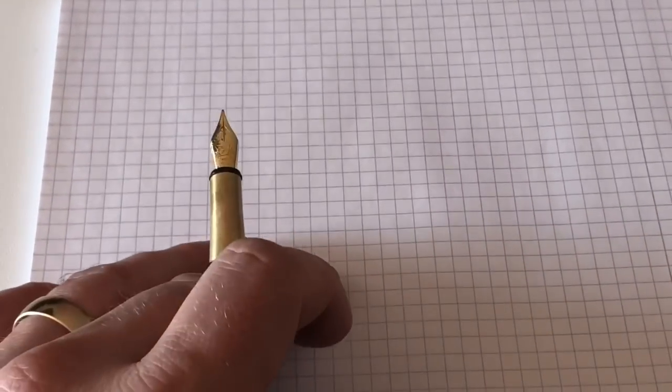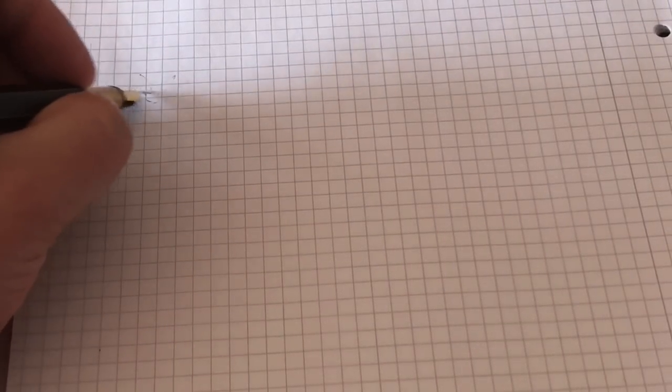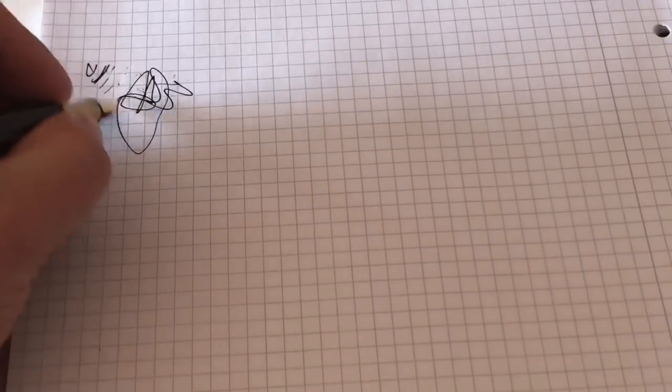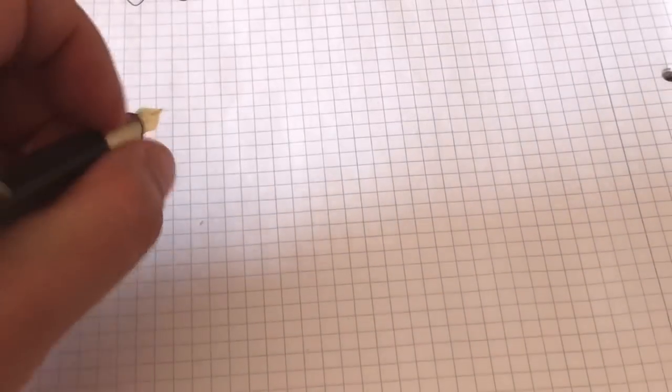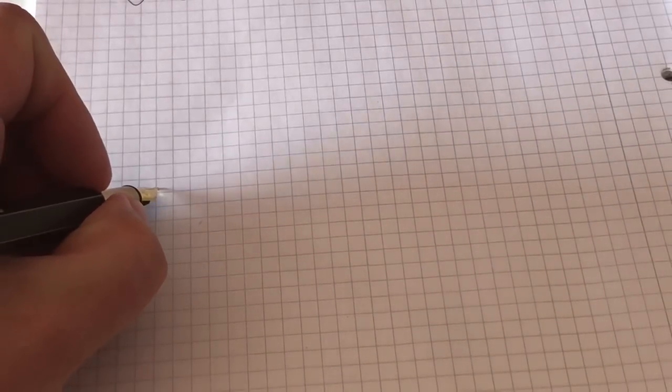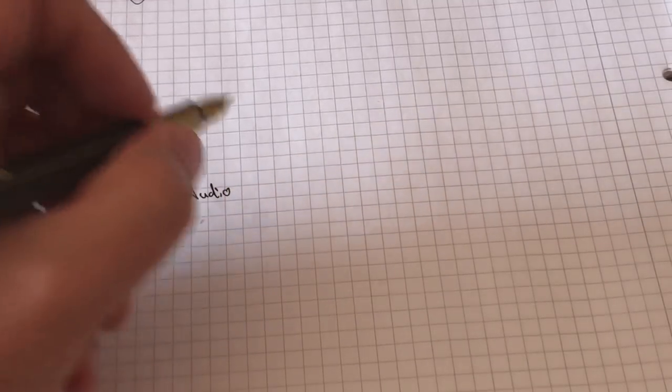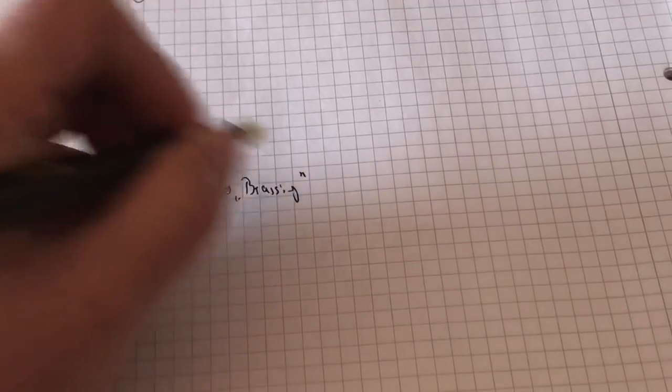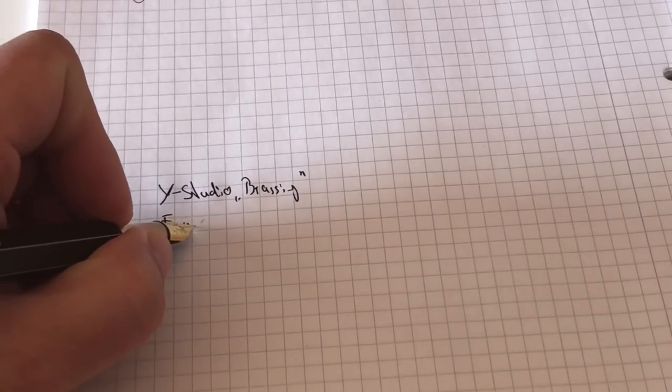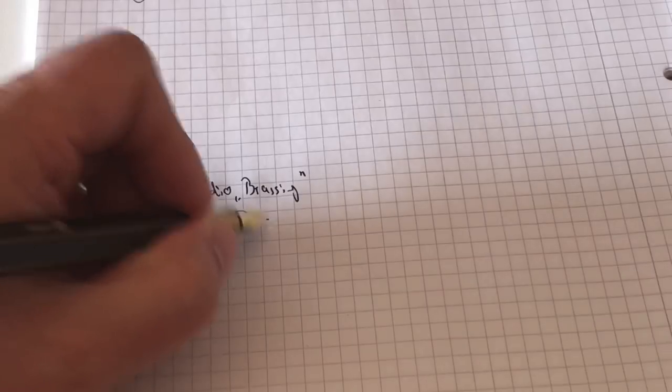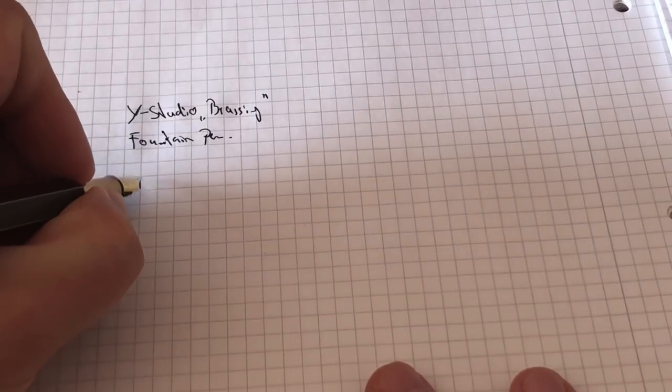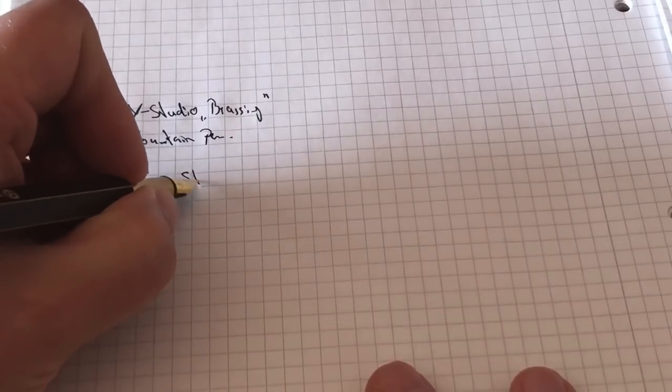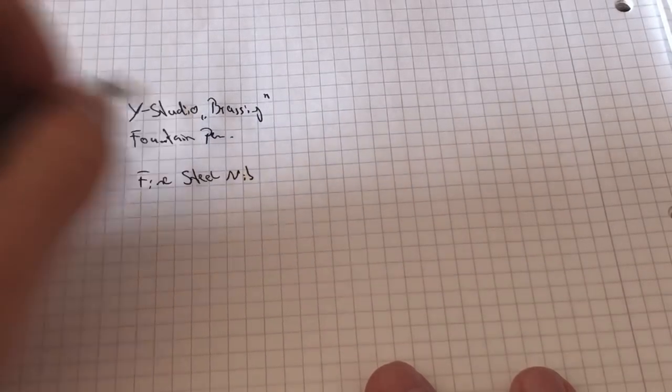Last but not least, writing sample. This pen does write really nice. It is inked with Diamine Blue Black, which sort of these days—now the nib dried up a little bit because it was uncapped so long—that normally doesn't happen. Diamine Blue Black became my sort of go-to reviewing ink, so to speak, these days. So we go with the Y-Studio brassing fountain pen.